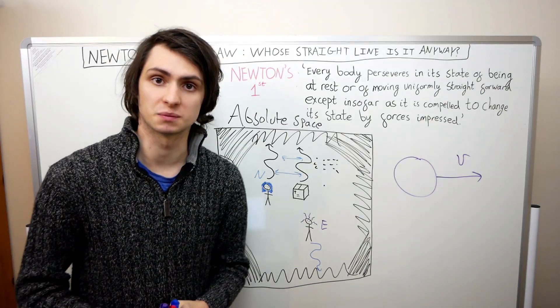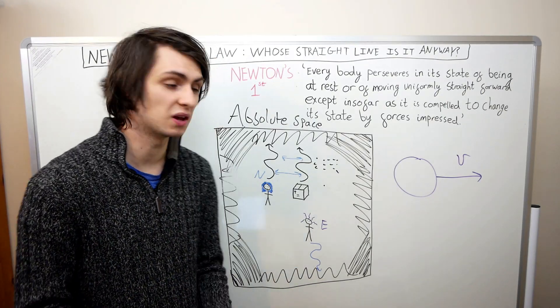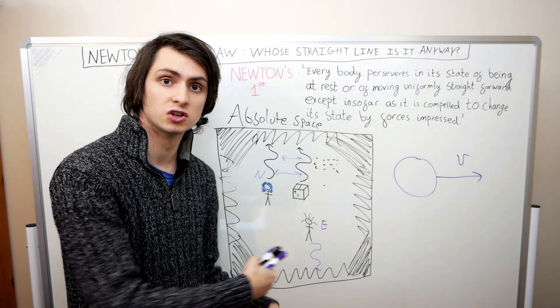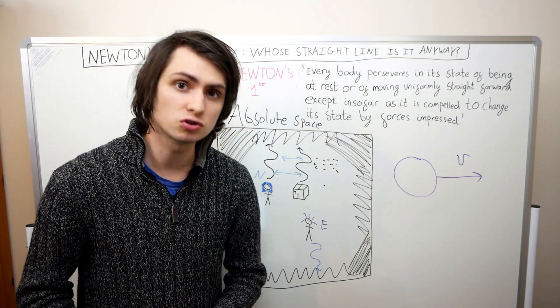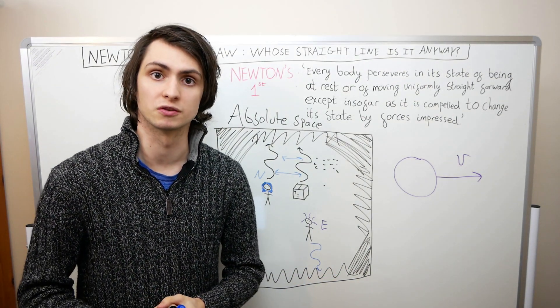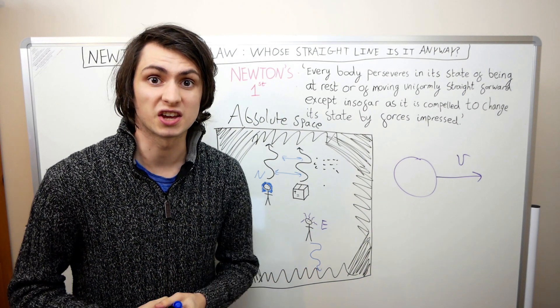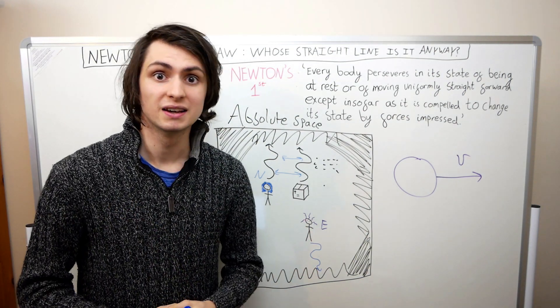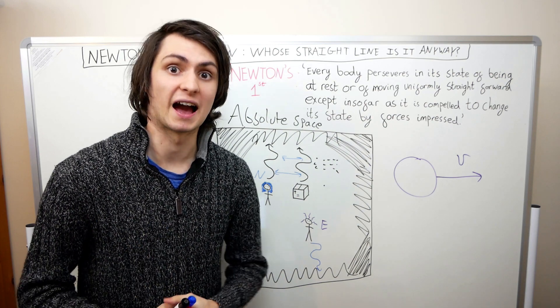If we ignore the undetectability of absolute space and instead pick a convenient perspective to work from, we can still use Newton's laws to predict how the things around us move.